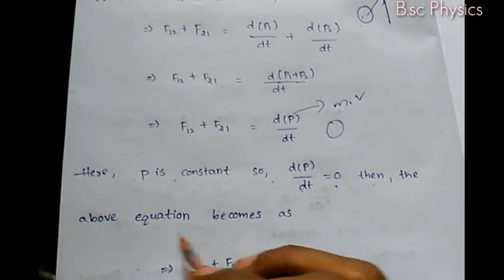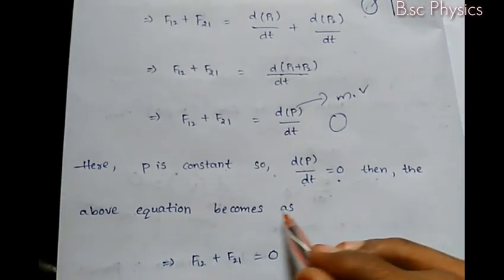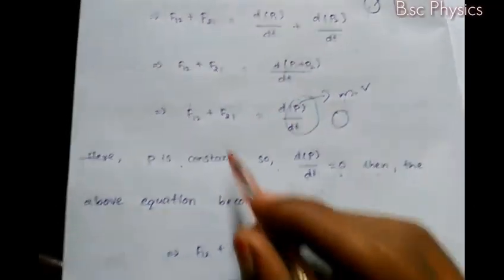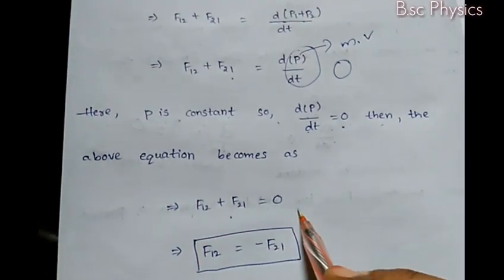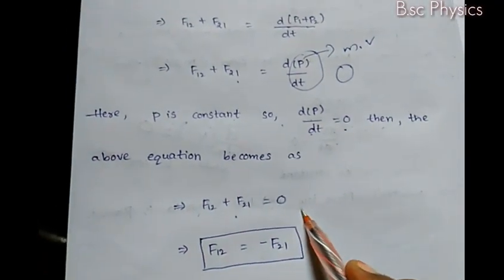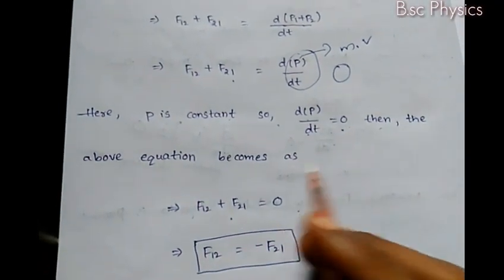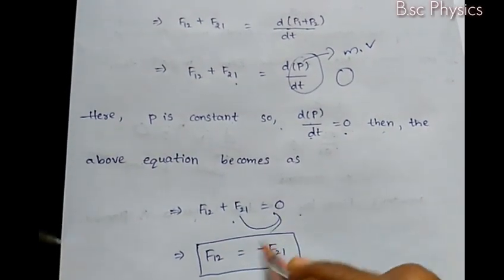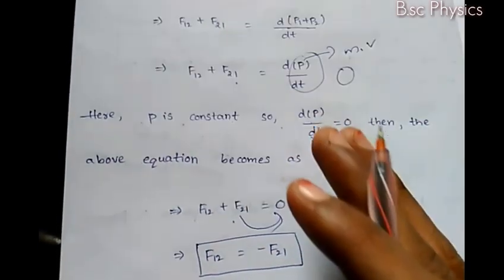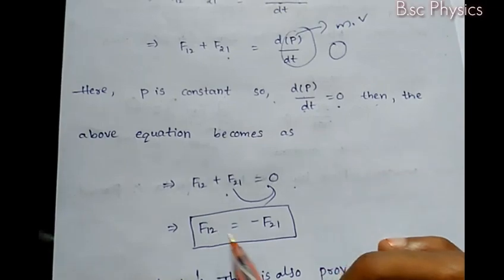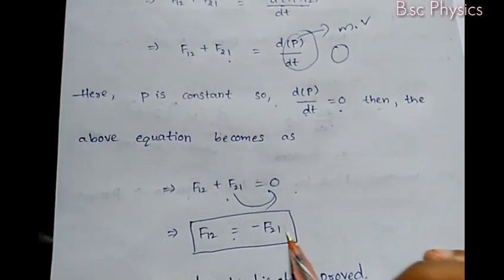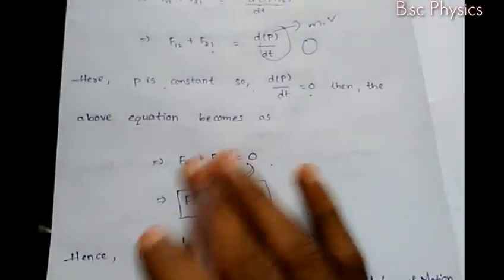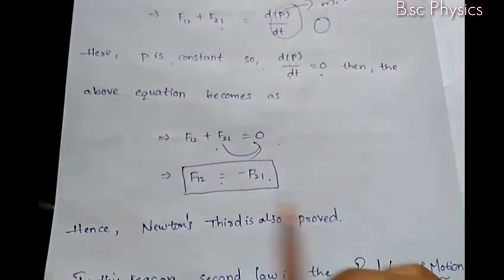The above equation becomes F12 plus F21 equals zero, which means F12 equals minus F21. This is Newton's third law.